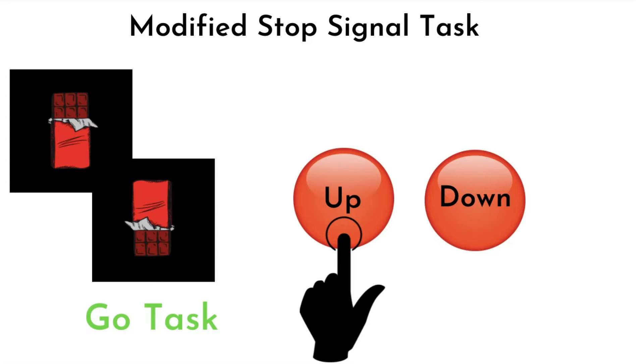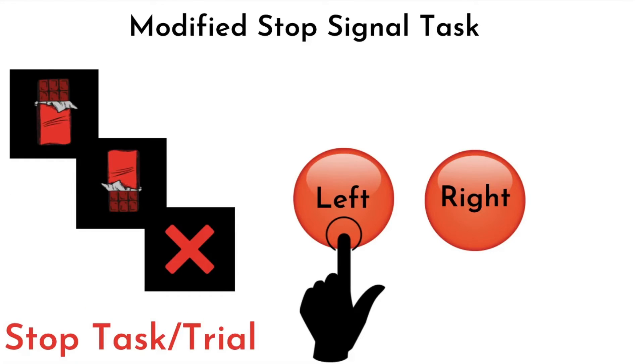Let's now move on to the last part of the video, wherein we study the key behavioral measures or dependent variables obtained from the Stop Signal Task. We will look at three key dependent variables typically accounted for and analyzed in recent studies: the Go Reaction Time, the Stop Signal Reaction Time, and the Probability of Signal Respond. There are other measures accounted for based on the research question, but these are the most typical.